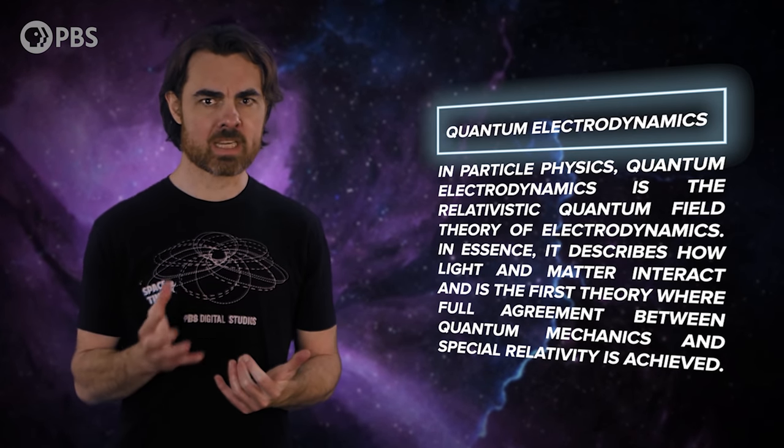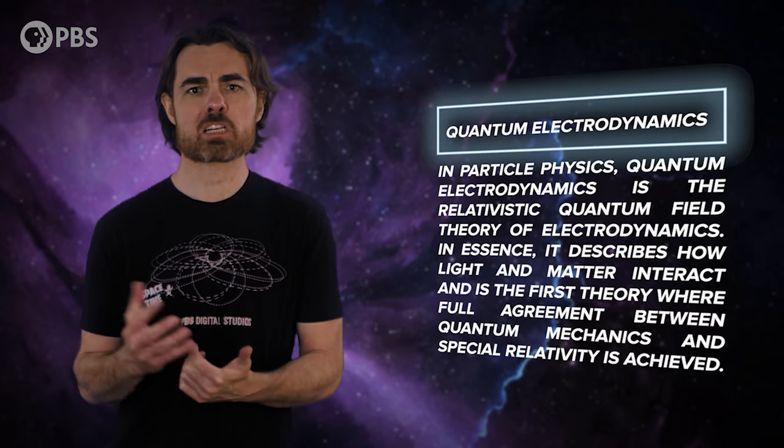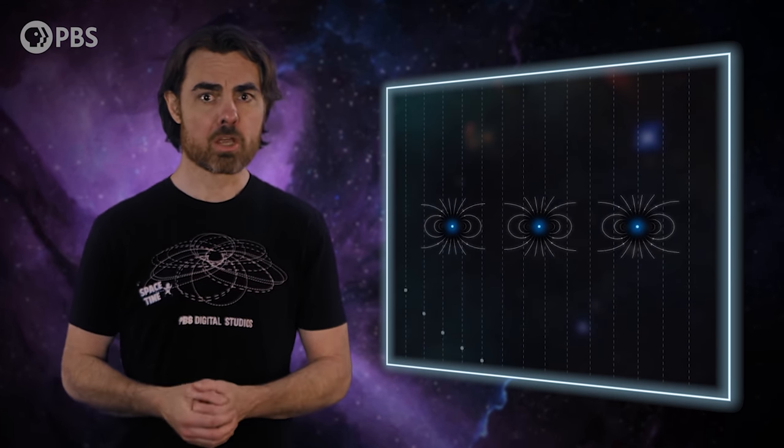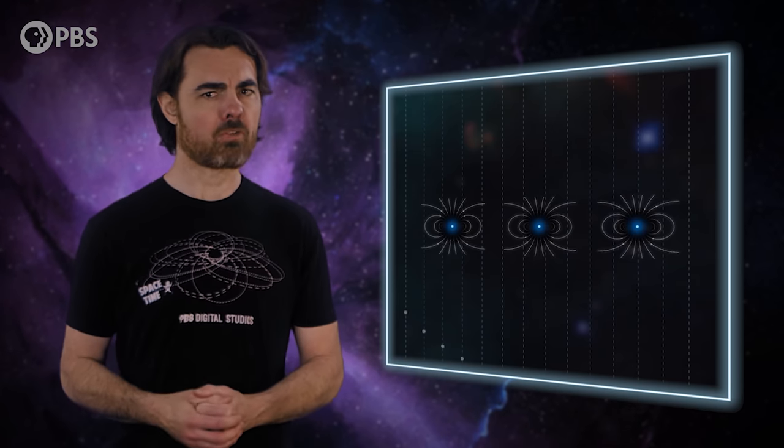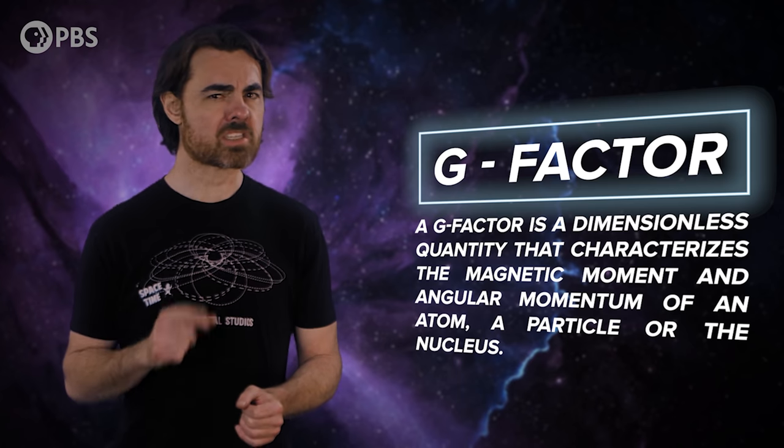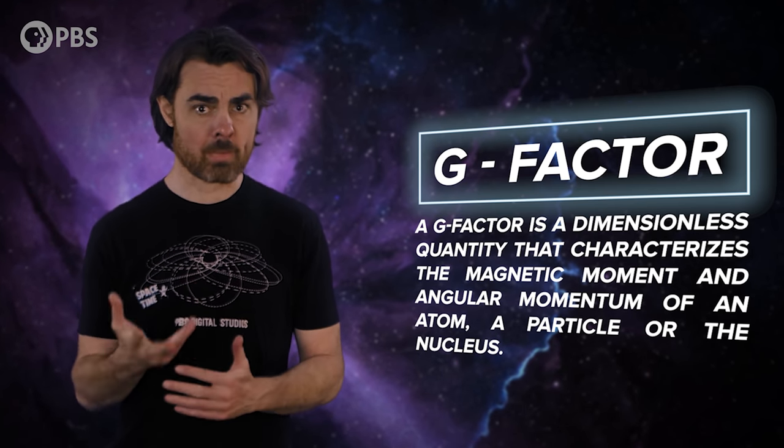One of the interactions that QED describes is how a charged particle will tend to rotate to align with a magnetic field. The strength of that interaction is defined by something called the g-factor for the particle. That's the g in our g-2, and we'll come back to that later.